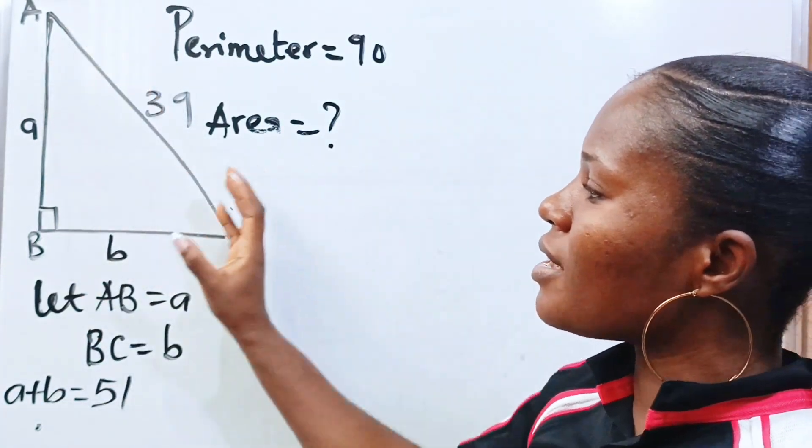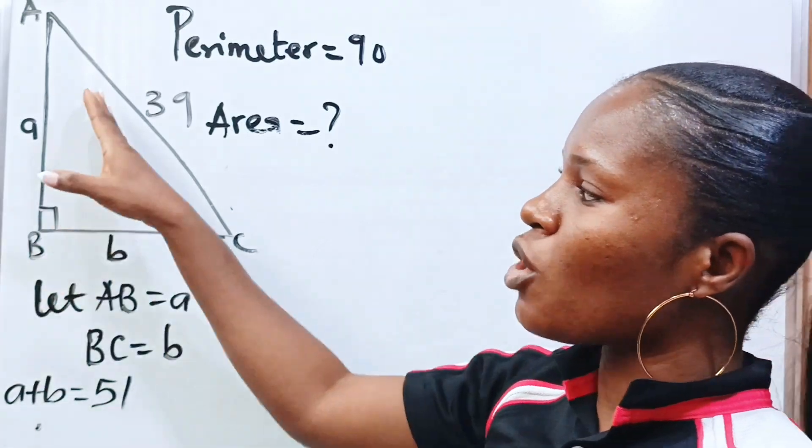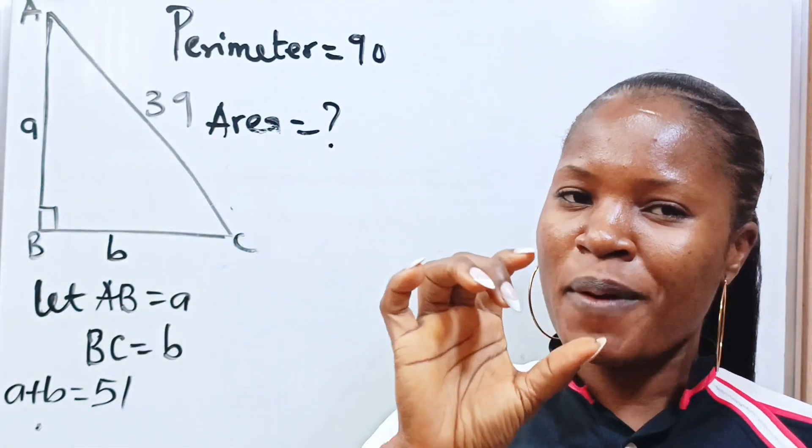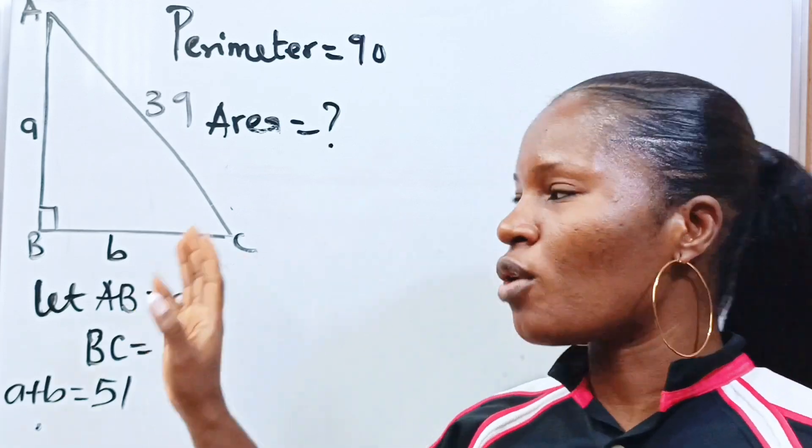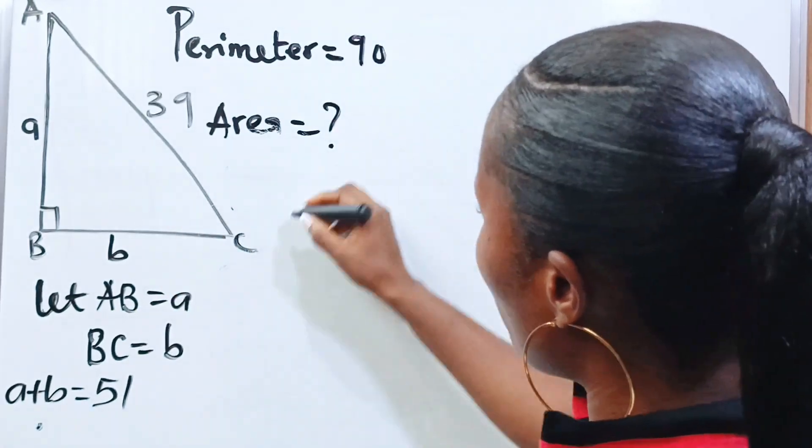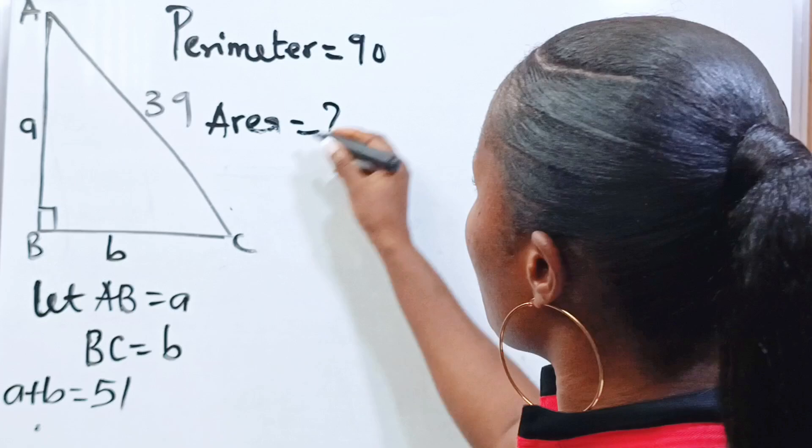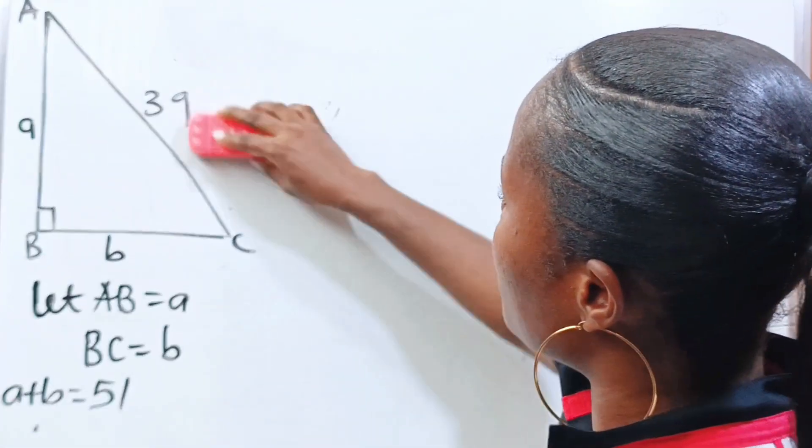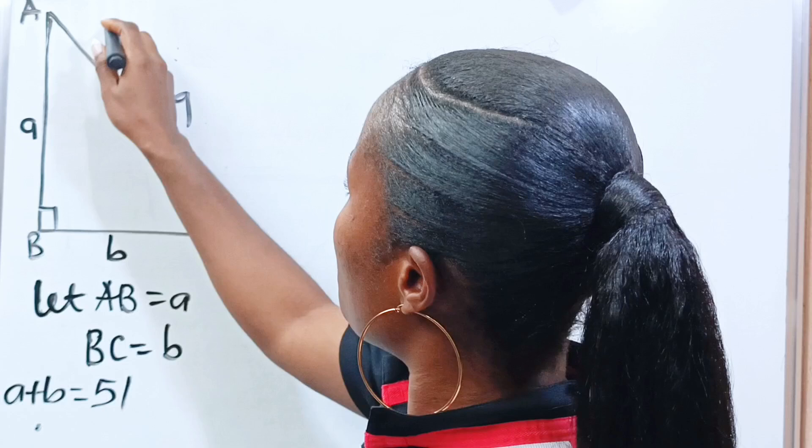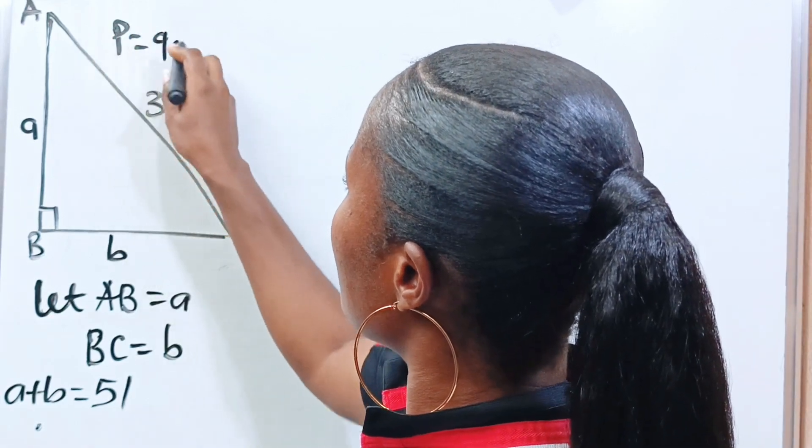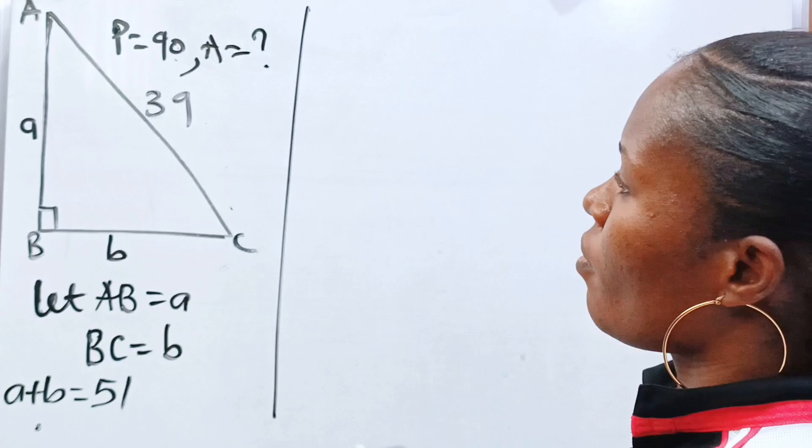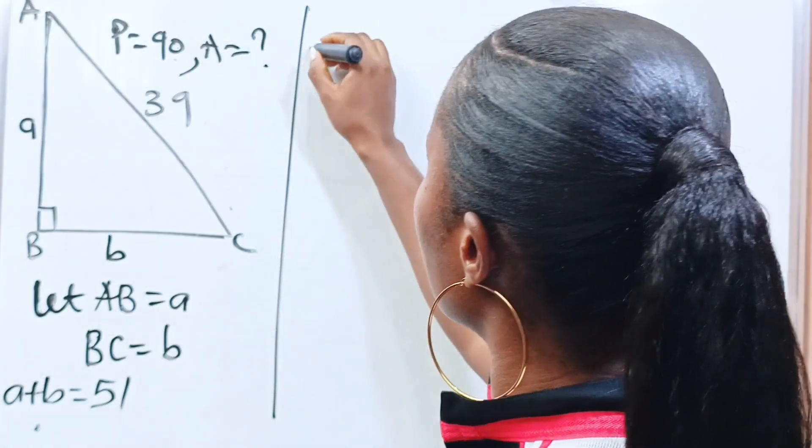Now, 39 is given and it is the hypotenuse of this right angle. So let's use Pythagorean theorem and solve this and see what we get. So I will still write the perimeter is 90, then the area is what? Now, using the Pythagorean theorem.